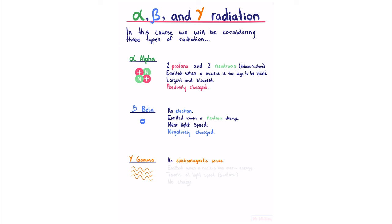Gamma radiation is an electromagnetic wave. It's emitted when a nucleus has excess energy, travels at the speed of light, 3 times 10 to the 8 meters per second, and has no charge.